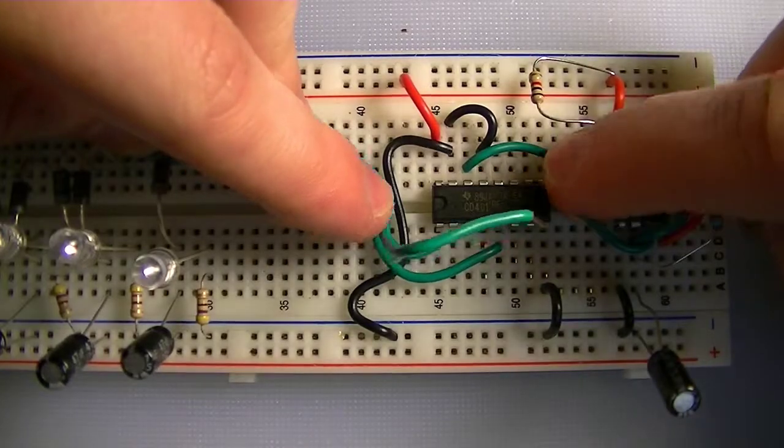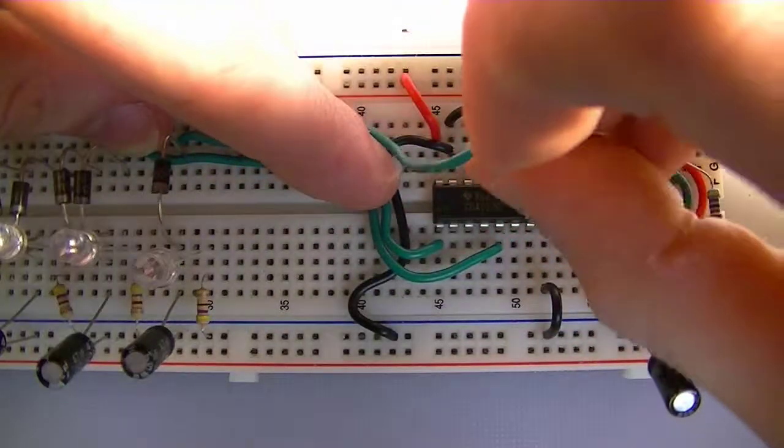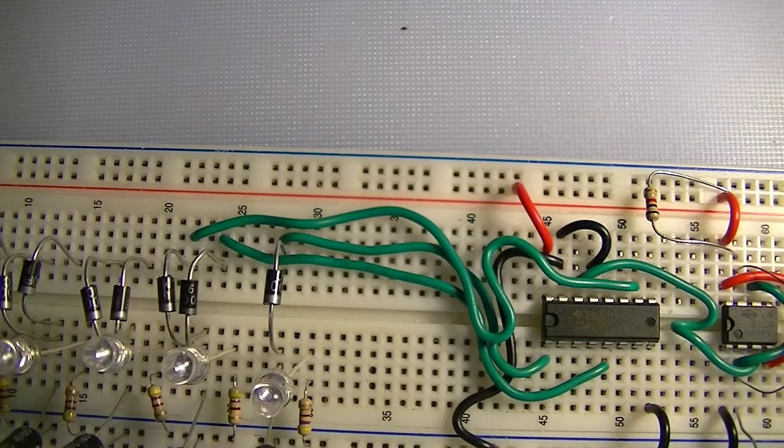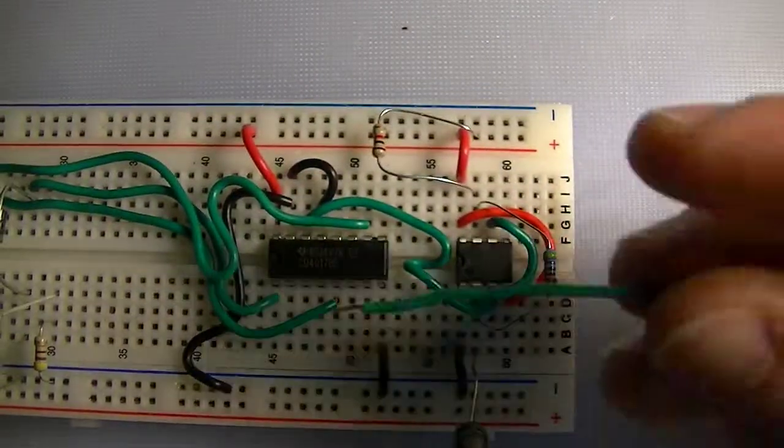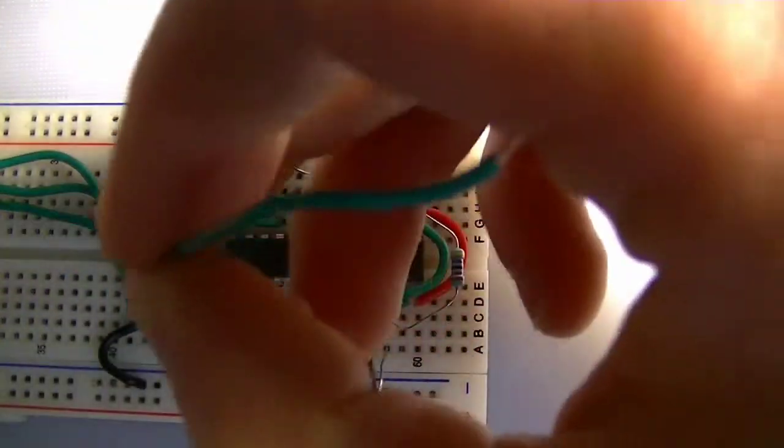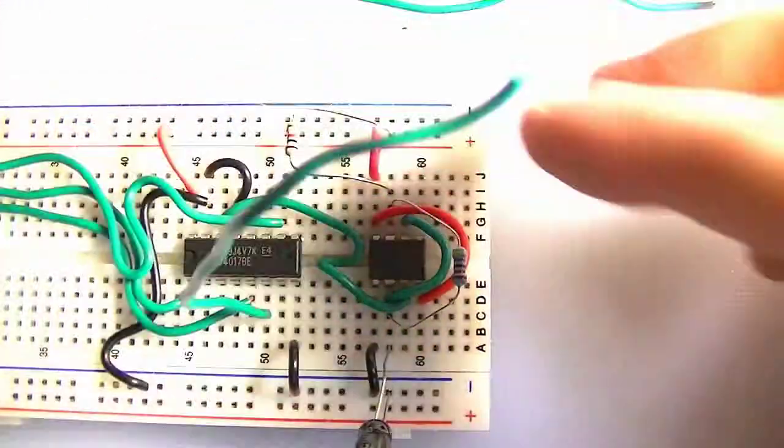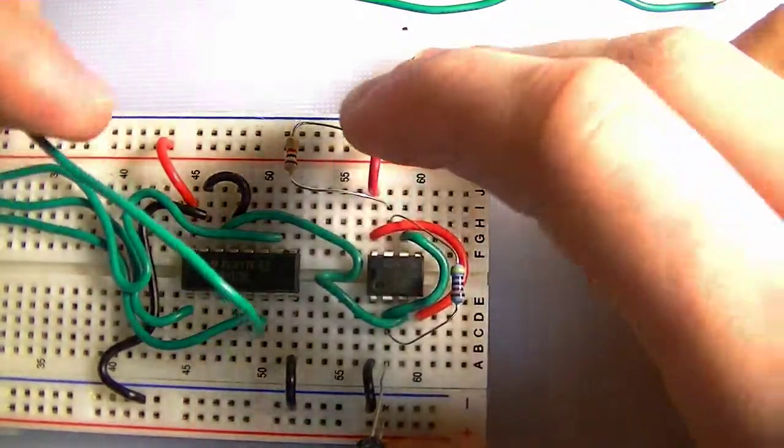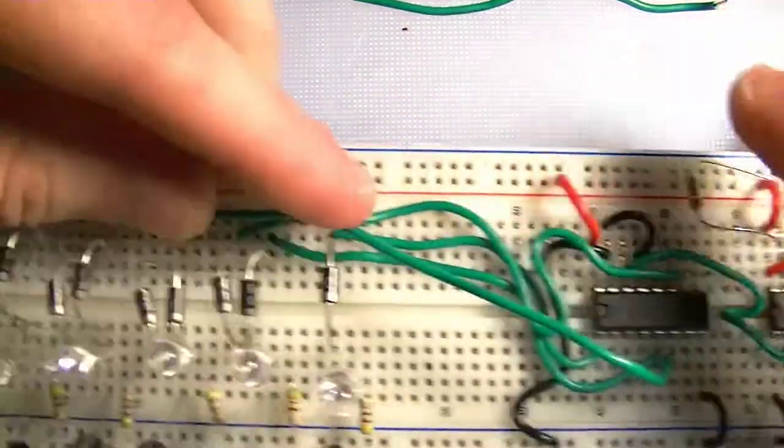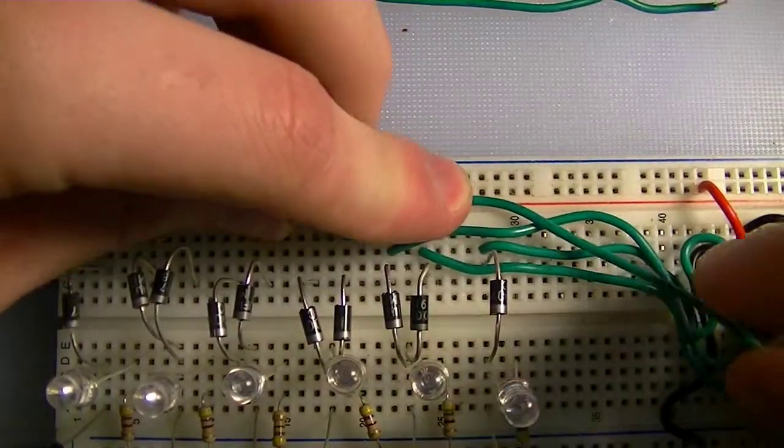Next one is pin 6: 1, 2, 3, 4, 5, 6. So there's 6, and that goes to the next diode for the next LED like so.